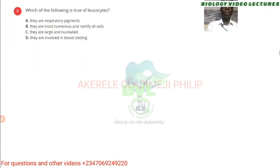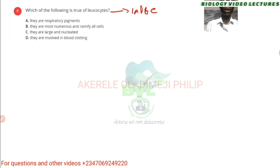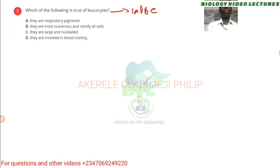Which of the following is true of leukocytes? Leukocytes are basically white blood cells — WBC. They are not respiratory pigments; those are haemoglobin in red blood cells. If you say they are most numerous, that's wrong because red blood cells actually have the highest number. The answer is that they are large and nucleated — yes, they are actually large.